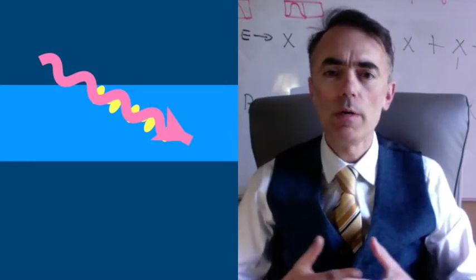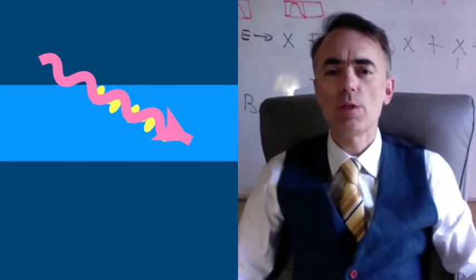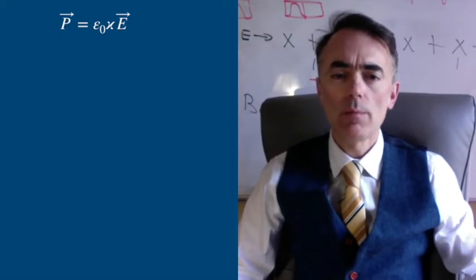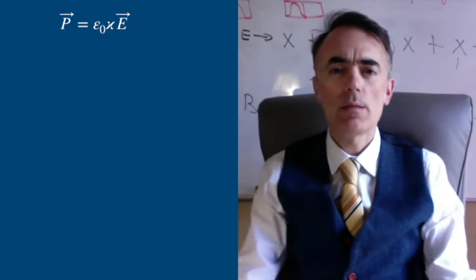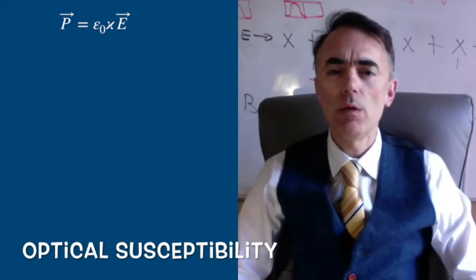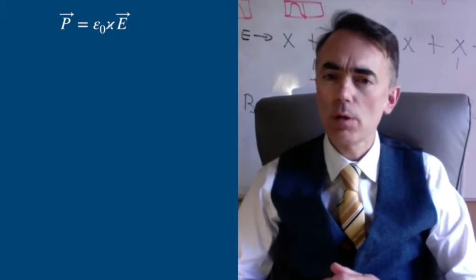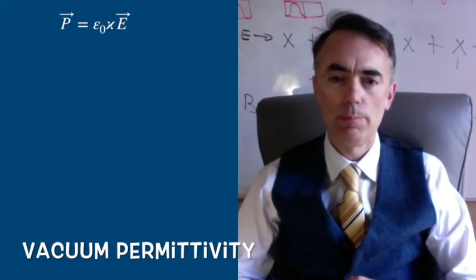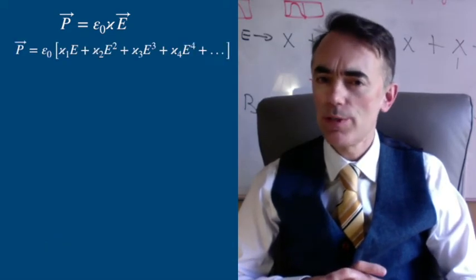The polarization of a medium due to an external electric field is usually described by p-vector equal to epsilon-nought chi e-vector, where chi is the susceptibility of the medium, the constant characteristic of the medium, and epsilon-nought is our friend, the vacuum permittivity. This susceptibility can be written as a power series expansion.